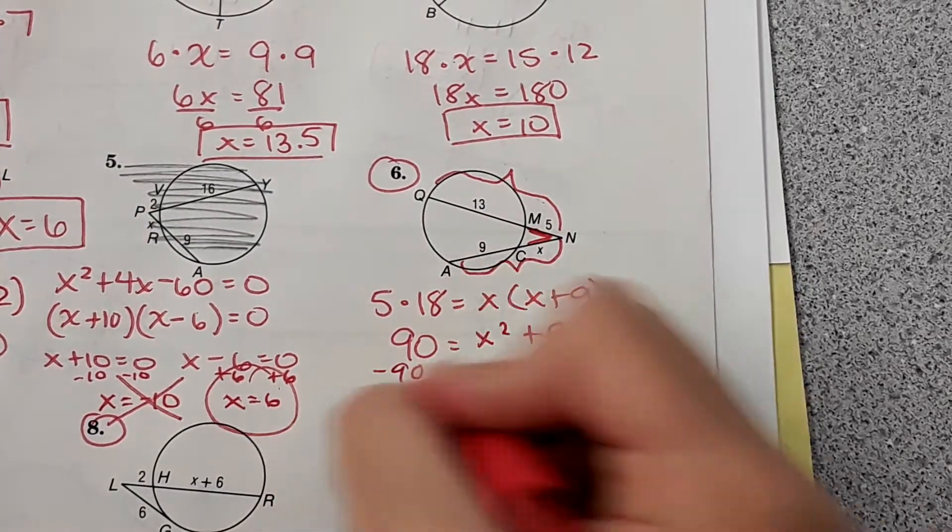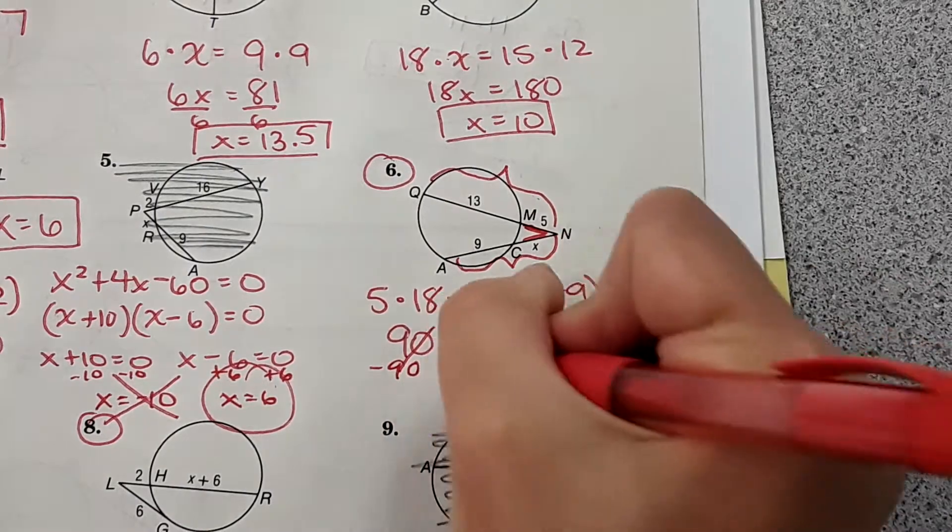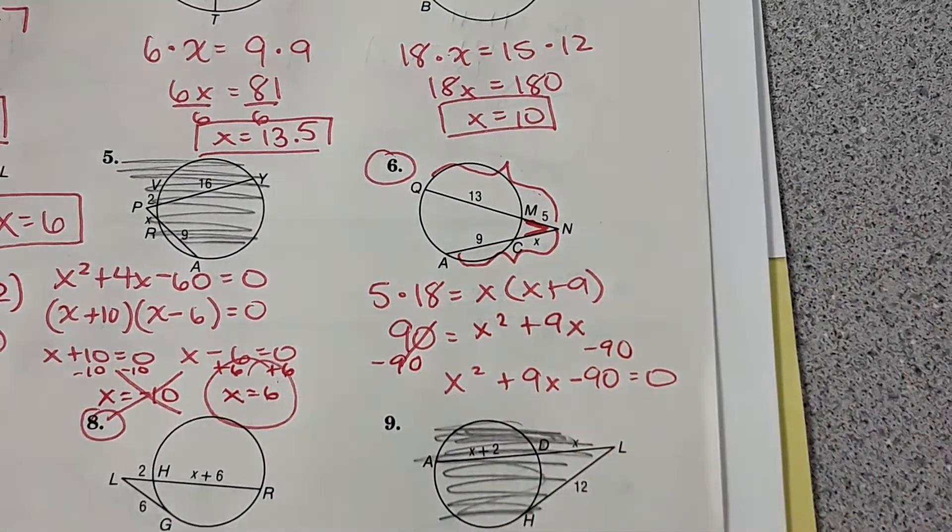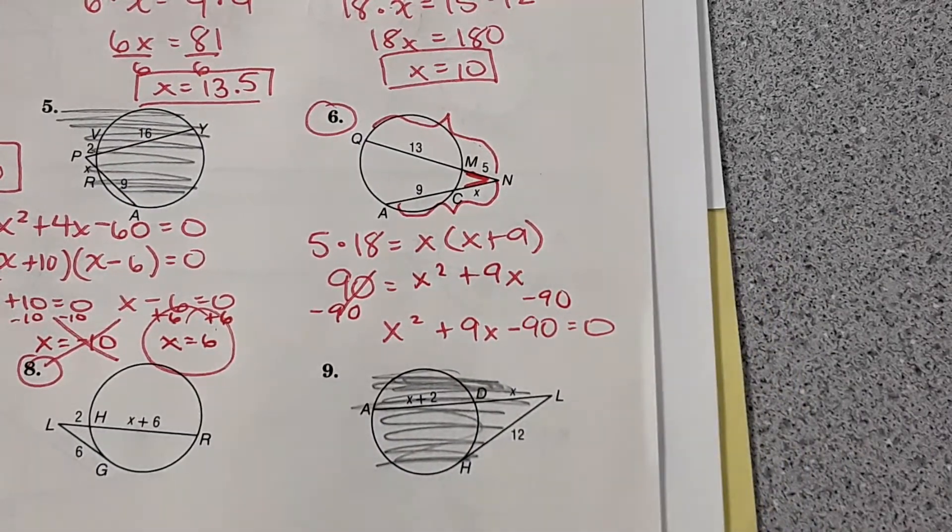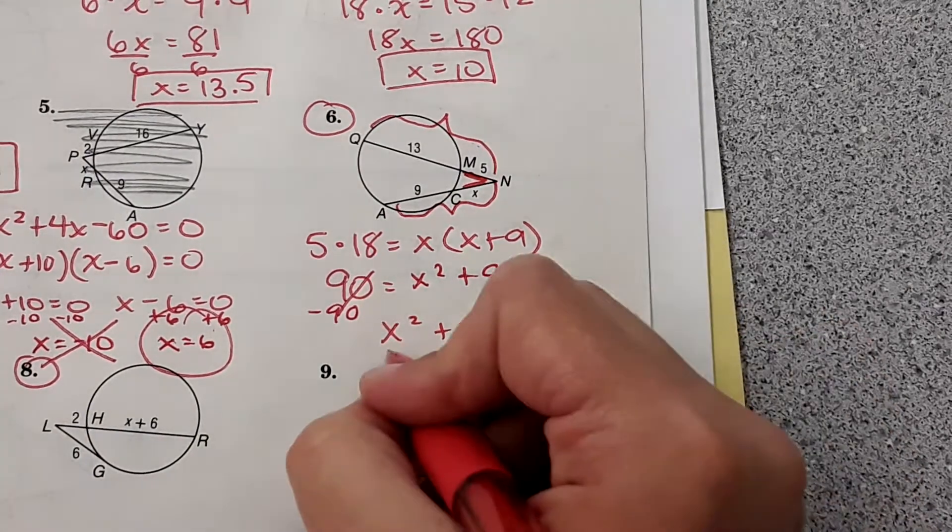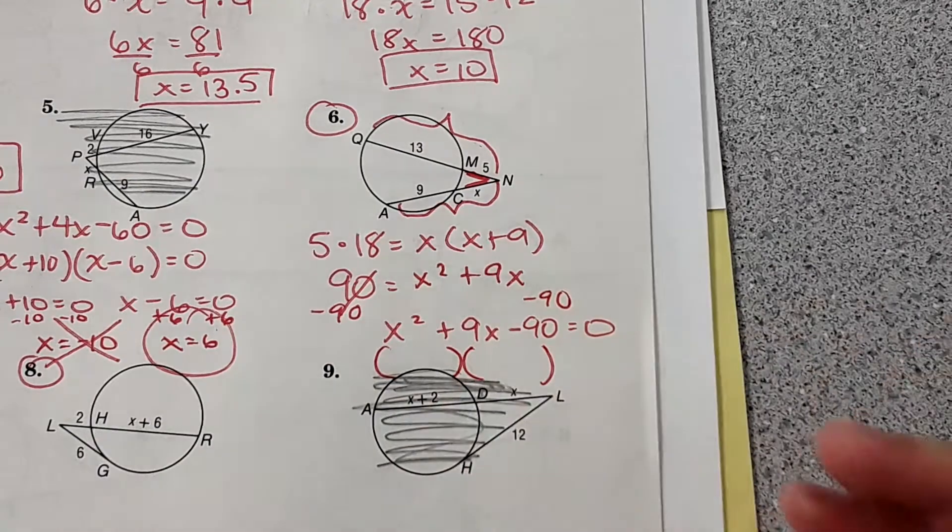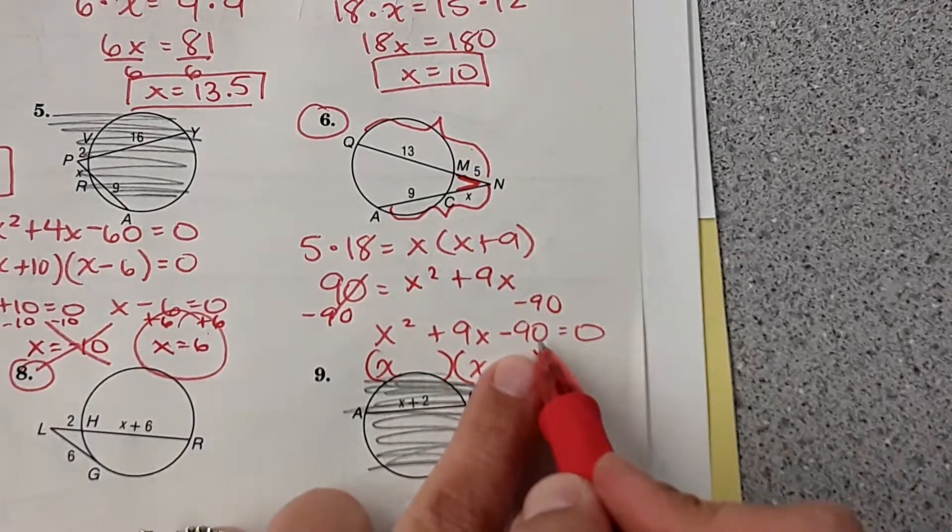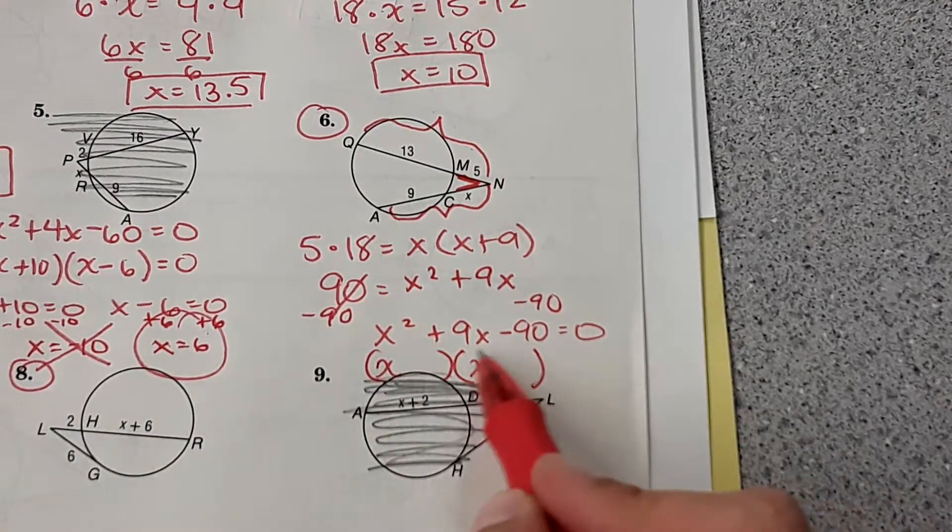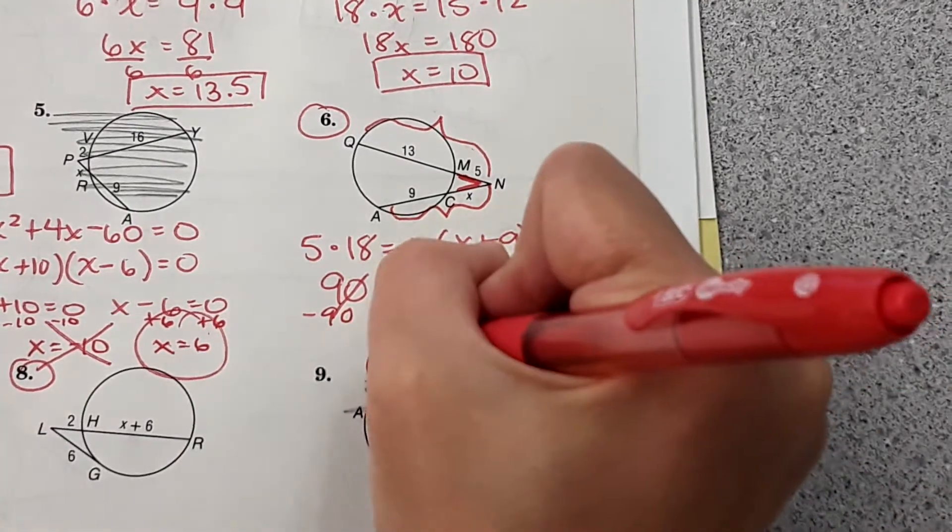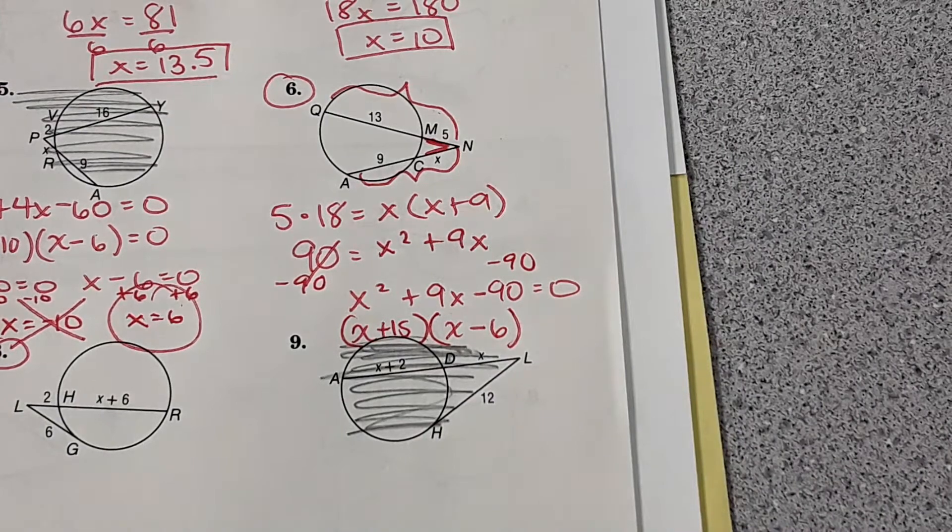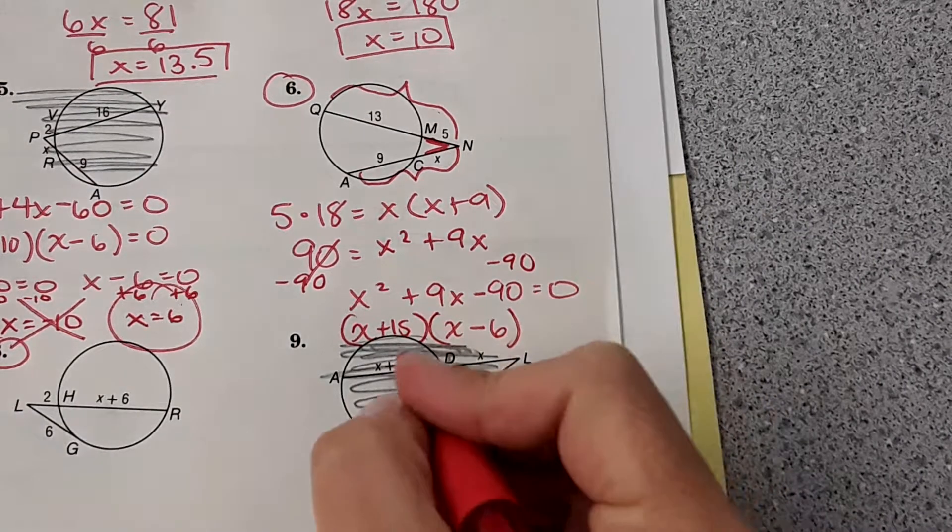Then I'm going to subtract 90 from both sides to get this equal to 0. x squared plus 9x minus 90 equals 0. Now we're going to factor this. Put an x here and here. Two numbers that multiply to negative 90 that add to 9 would be 15 and negative 6. So x plus 15, x minus 6.